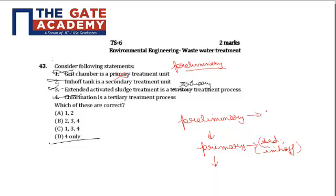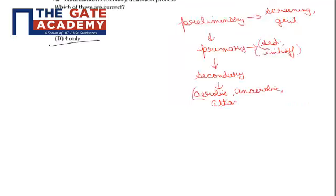Preliminary includes screening, grid chamber. After primary, we have secondary treatment which may include aerobic or anaerobic with attached culture or suspended microbial culture.